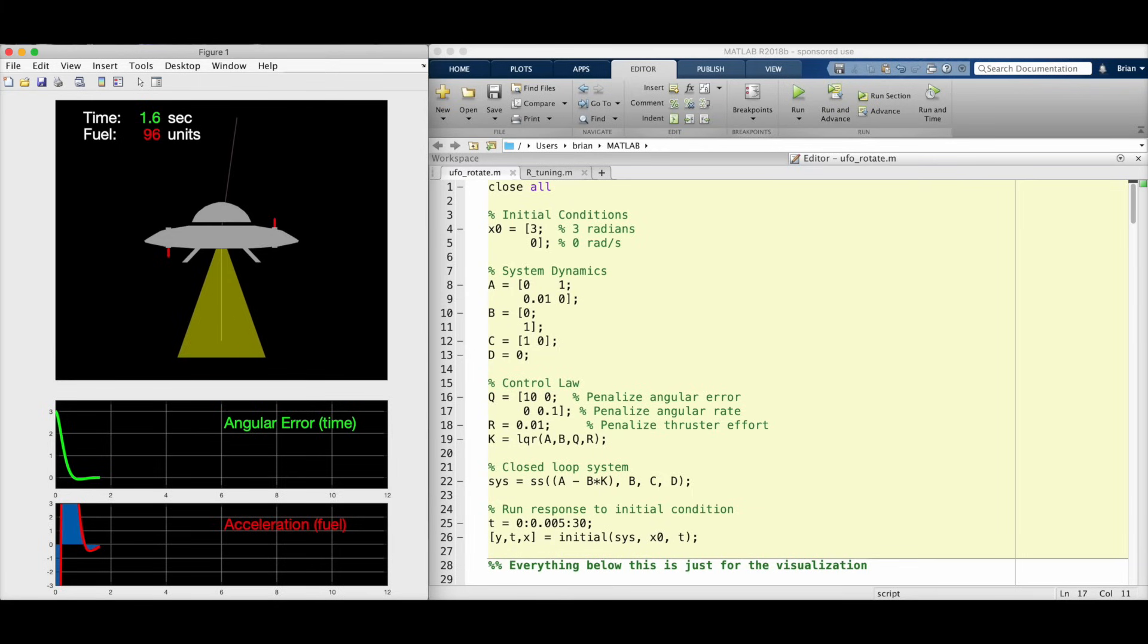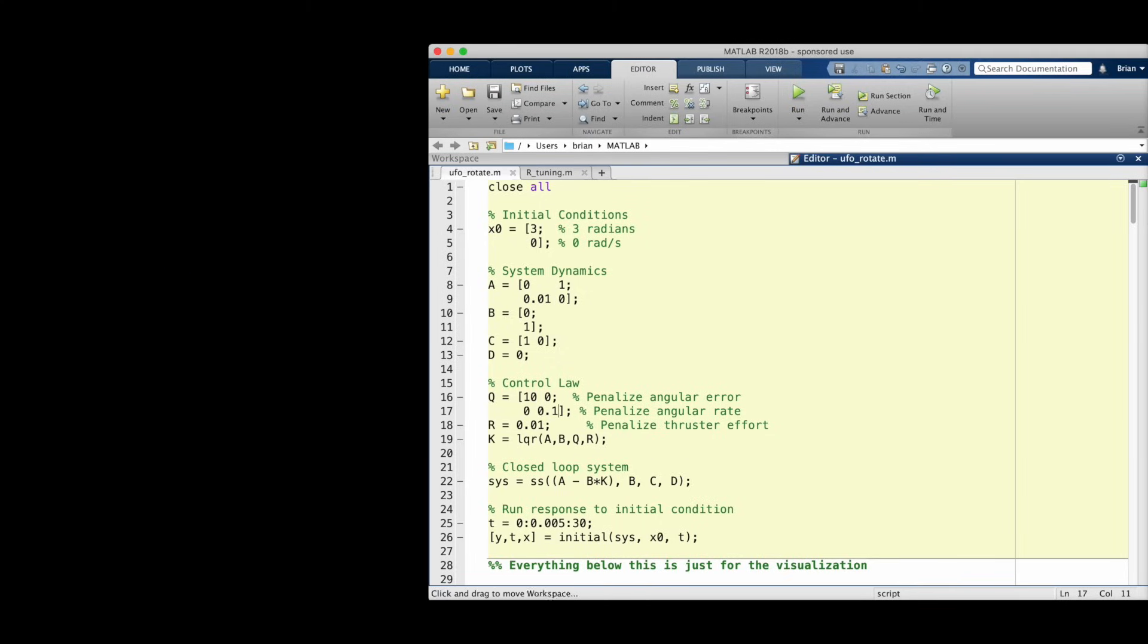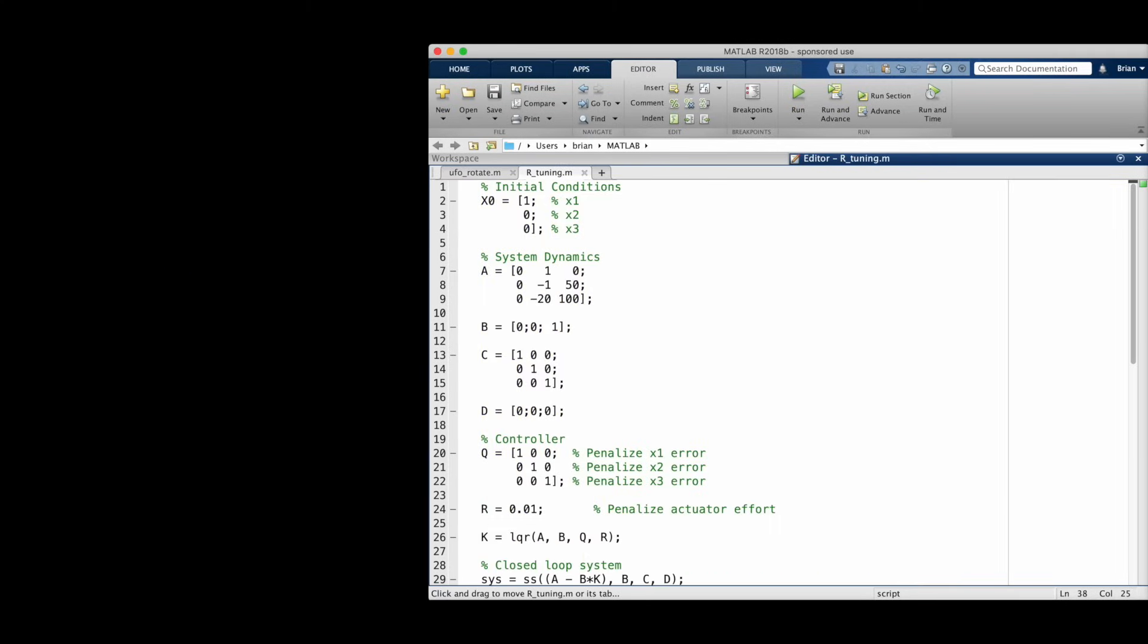Alright, so hopefully you're starting to see how we can tweak and tune our controller by adjusting these two matrices. And it's pretty simple. Now, I know this video is dragging on, but with a different script I want to show you one more thing real quickly, and that's how LQR is more powerful than pole placement.